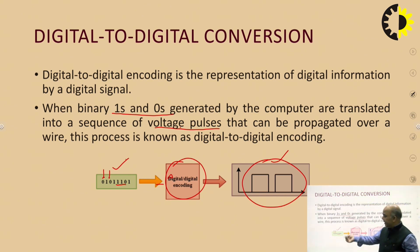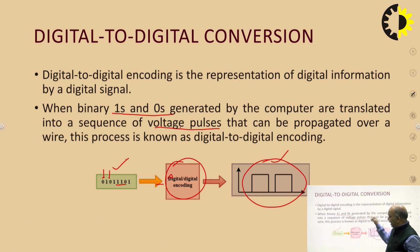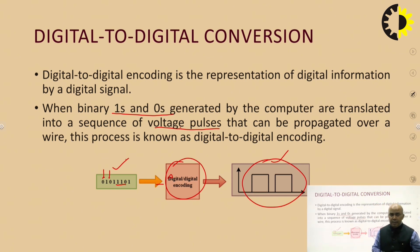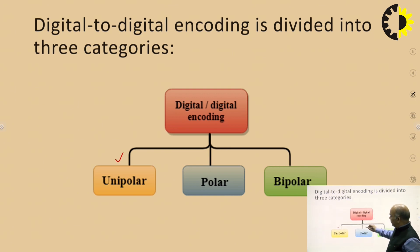The encoder generates pulses, either positive or negative, according to what kind of methods and coding schemes are being used to transmit the data. Similarly, for analog-to-digital conversion, analog signals are generated and analog-to-digital encoders convert the message into voltage pulses. We will be focusing on digital-to-digital conversion in this lecture.